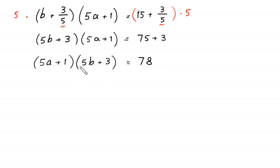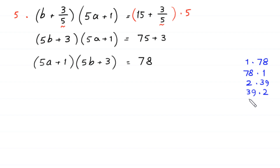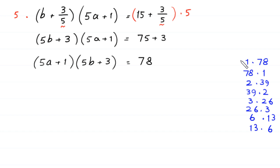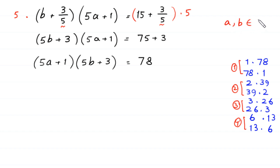Now we have two factors on the left side, and 78 can be factorized as: 1×78, 78×1, 2×39, 39×2, 3×26, 26×3, 6×13, and 13×6. So we have 8 pairs of factors grouped into 4 cases. Since a and b are positive integers, we must solve all 4 cases.